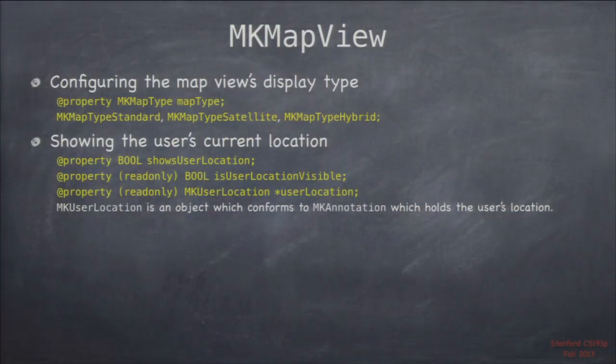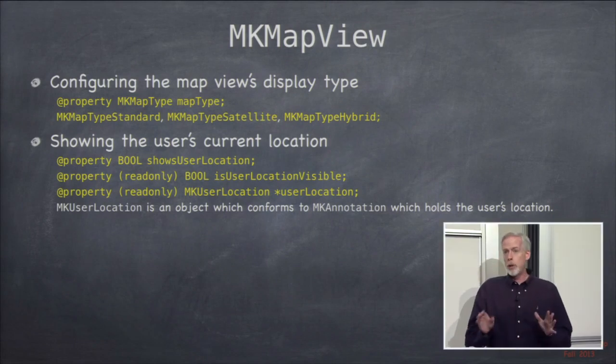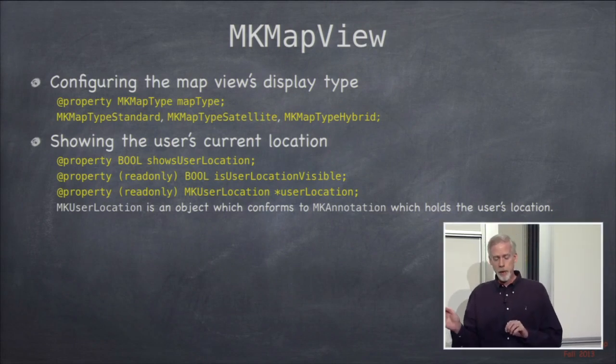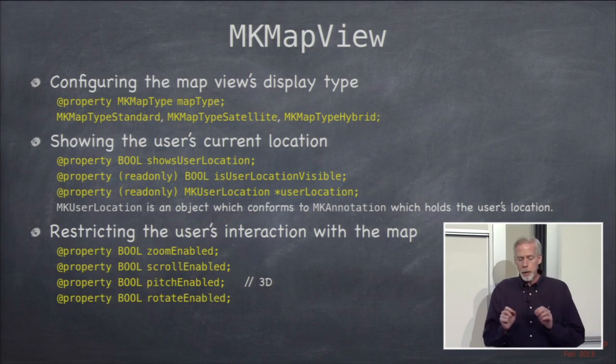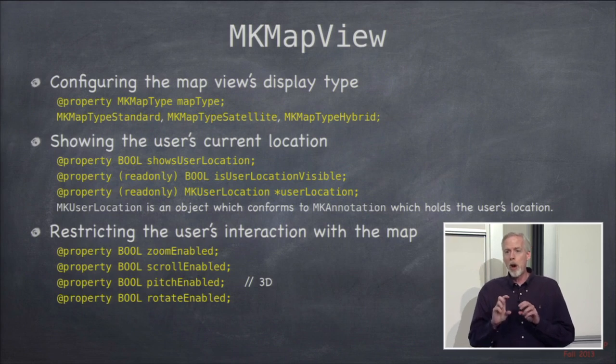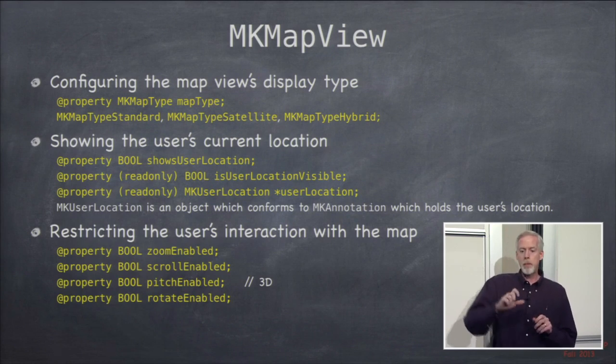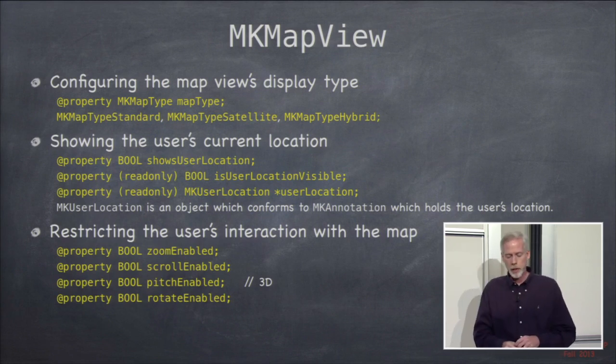You can configure the way the map displays. The map view display is just like the Maps app — pretty much anything you can do in the Maps app, including 3D, rotating, zooming in and out, all of that you can do with the map view. You can also use hybrid mode where it's a satellite image overlaid with roads. You definitely want to check out the MKMapView API. You can show the user's current location using core location. You can also restrict things — maybe you don't want the user to go into 3D mode, so you can turn pitchEnabled off. Same with rotate.